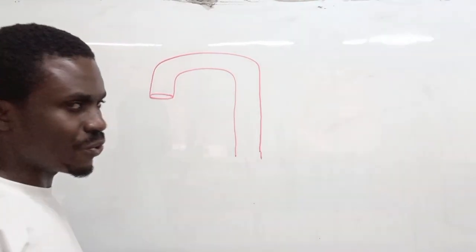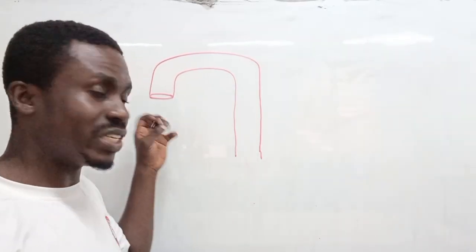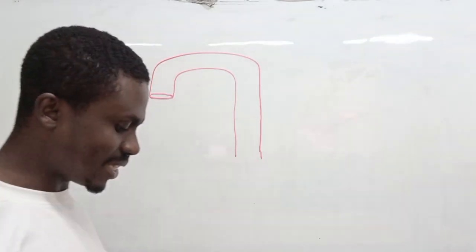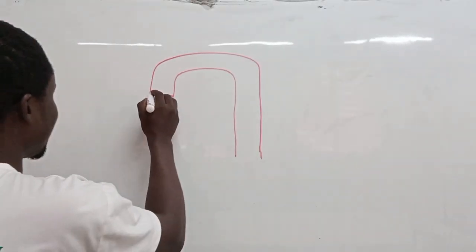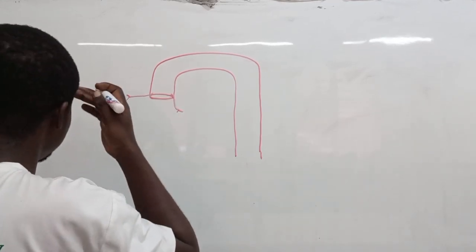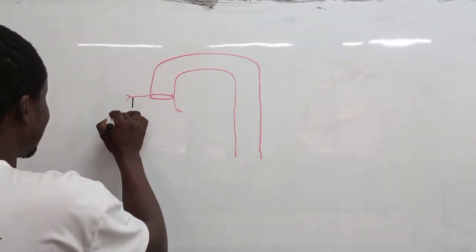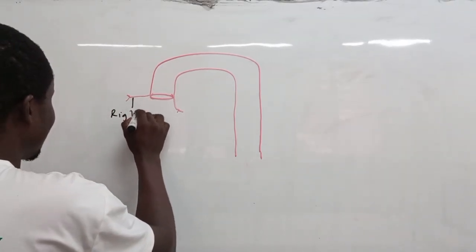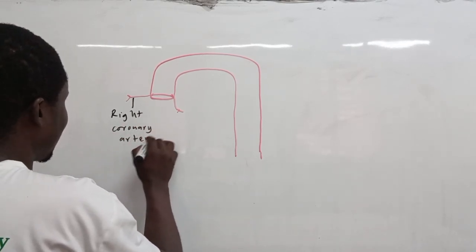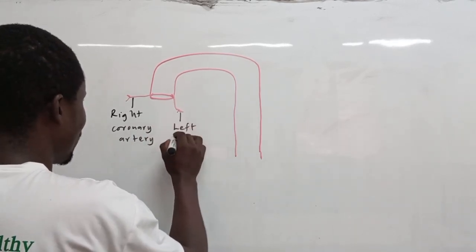From the left ventricle, we see the ascending aorta coming out, giving off important branches. From the ascending aorta itself we have the right coronary artery, and toward the left side we get the left coronary artery.